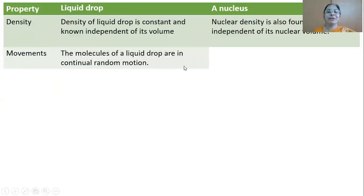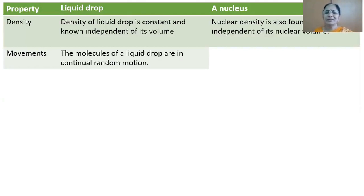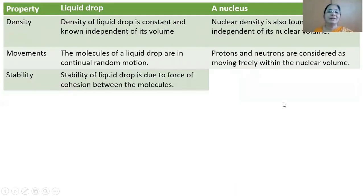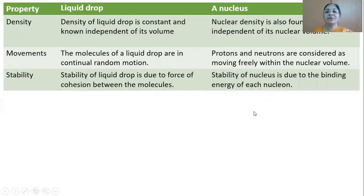Movements: the molecules of a liquid drop are in continual random motion, constantly moving and hitting each other, producing the temperature of the liquid. Same way, inside the nucleus the nucleons are in constant motion and that is responsible for the nuclear temperature. Protons and neutrons are considered as moving freely within the nuclear volume. Stability: to be stable, the liquid drop assumes a spherical shape, and stability of the liquid drop is due to the force of cohesion between the molecules. Same way, stability of the nucleus is due to the binding energy of each nucleon.